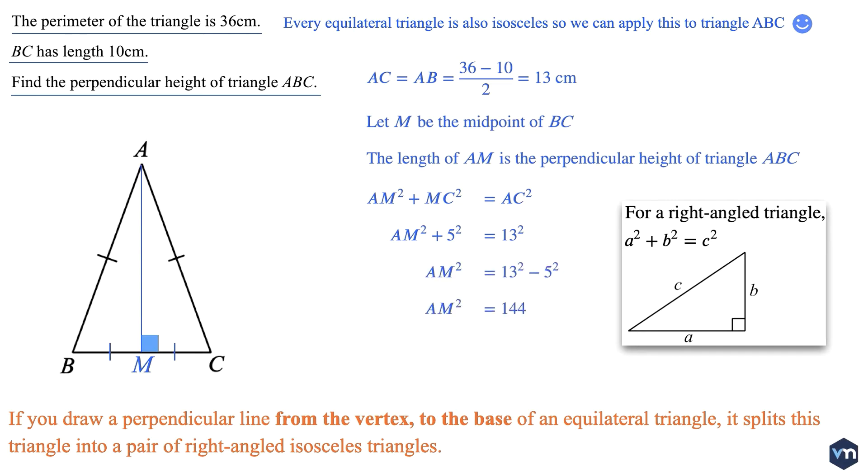And so AM is equal to the square root of 144. And so AM, the perpendicular height of triangle ABC, is equal to 12 cm.